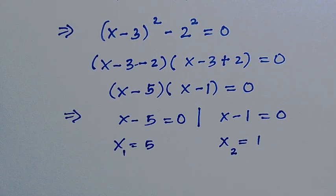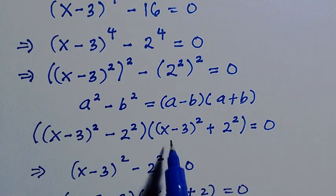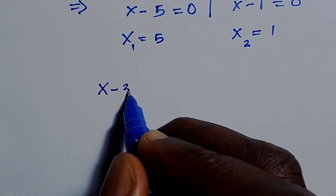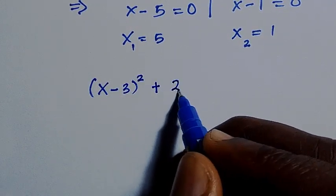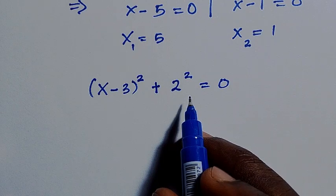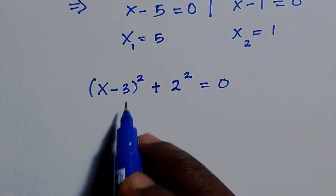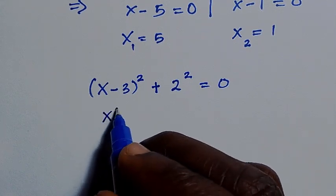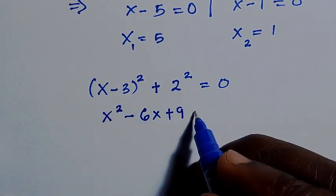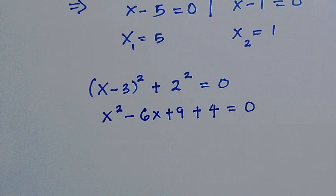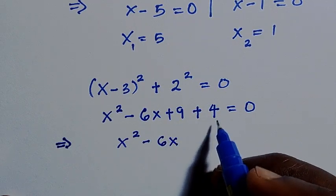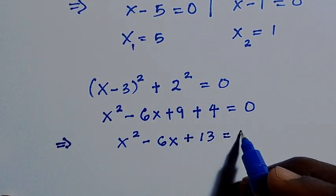Both of these are real solutions. Now considering the second part — the positive factor — we write (x minus 3) squared plus 2 squared equals 0. There is an identity for this, but it won't work at this stage, so let's expand it out. Expanding gives x squared minus 6x plus 9 plus 4 equals 0, which implies x squared minus 6x plus 13 equals 0.